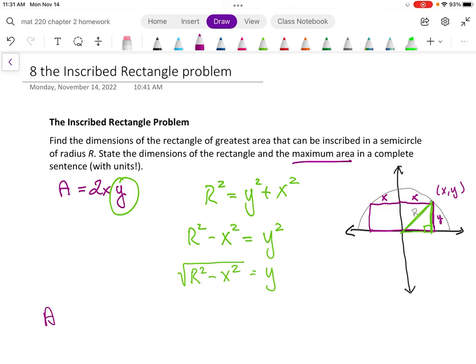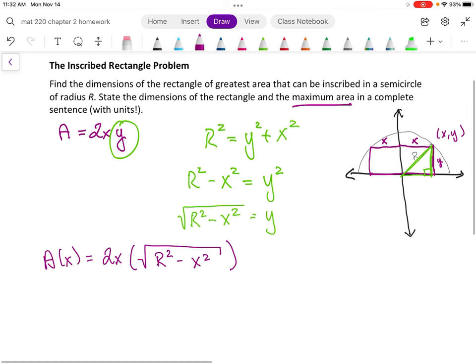So area as a function of x would be equal to 2x times the quantity, the square root of r² minus x². And you might be going, oh, I have an extra variable here, I have an x and I have an r. But remember, r is a constant value, it's a number, we just don't know what that number is. It's like you have a pi in your equation. So I'm in a good place to take a derivative here.